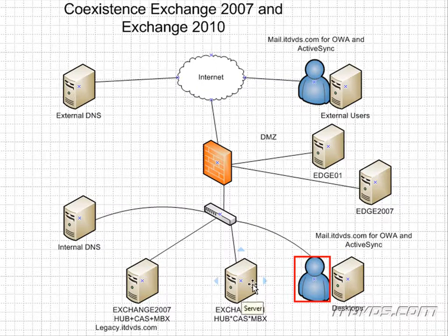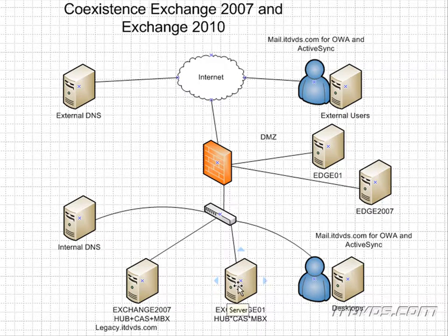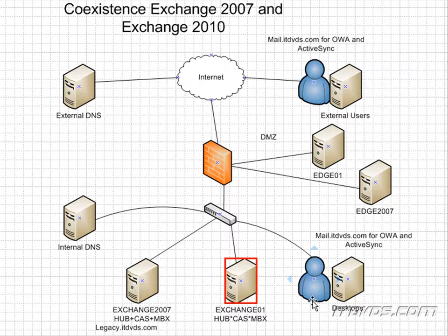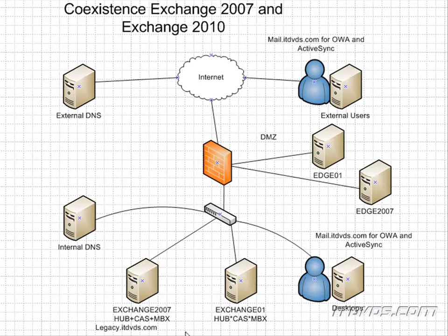We're going to connect to our Exchange 2010 client access server, and when we configure our legacy URL, it's going to be legacy.itdvds.com. When the client connects to our client access server on Exchange 2010, it will actually redirect them to Exchange 2007 if that's where their mailbox is. If it's on Exchange 2010, it will keep them there or redirect them to the appropriate Exchange 2010 mailbox. It will be a single sign-on process, so it will actually be seamless to the users — they won't even realize they're being redirected to legacy.itdvds.com while their mailbox is still on Exchange 2007. We do need to keep our hub transport and client access server roles for Exchange 2007 up and running as long as we have mailboxes on our Exchange 2007 server.